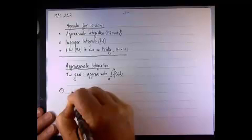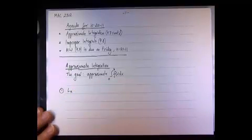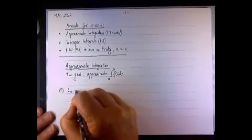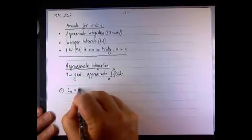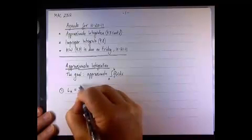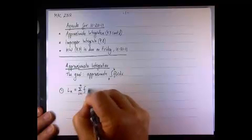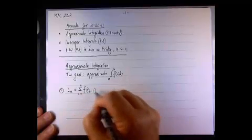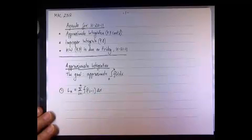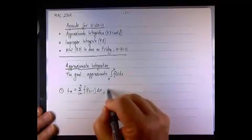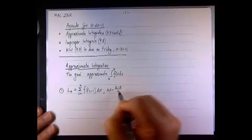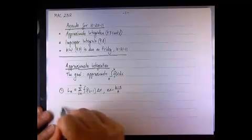The first two techniques were the left-hand sum or left-hand point sum, denoted as L sub n, where n indicates the number of sub-intervals. The left-hand point is the sum where we let the index i go from 1 to n of f of x sub i minus 1, and multiply by the width delta x, where delta x equals b minus a divided by n.